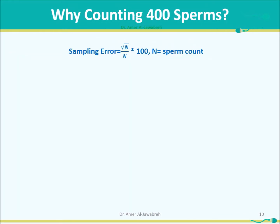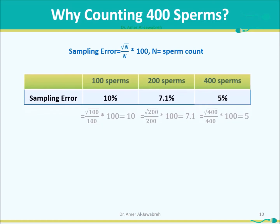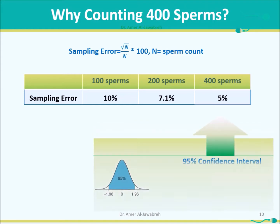Why count 400 sperms? Sampling error equals square root of n over n, times 100, where n equals sperm count. Sampling error at 100 sperms is 10%, while at 200 sperms it is reduced to 7.1%. At 400 sperms it is 5%, which is equivalent to a 95% confidence interval.